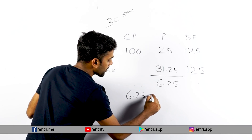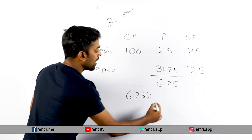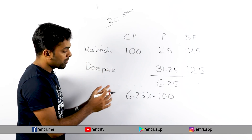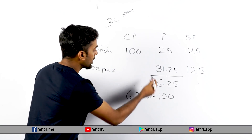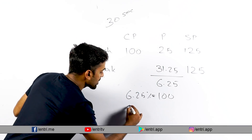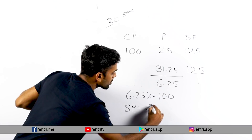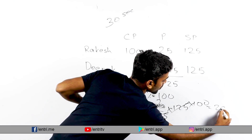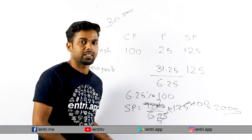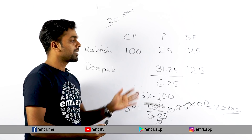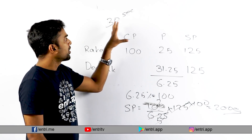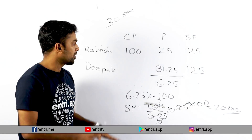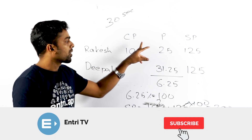The profit difference between these two is 6.25, but the actual profit difference given is Rs.100. In the normal case, we take cost price as 100. If the profit percentage is 25%, the selling price comes out as 125.